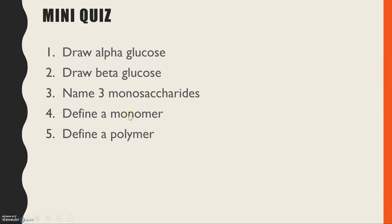Can you from memory draw alpha glucose, beta glucose, name three monosaccharides, and then define a monomer and polymer?